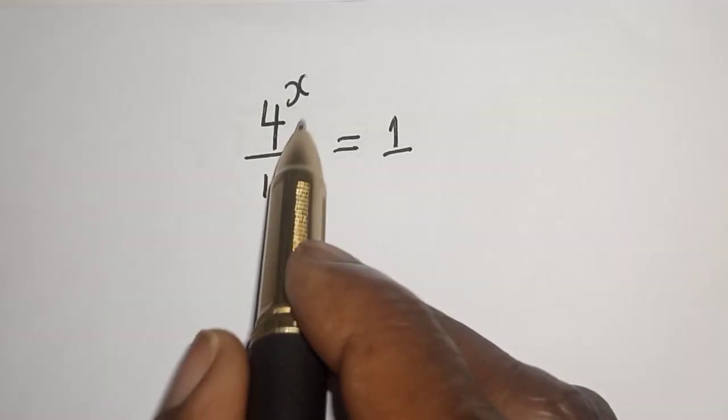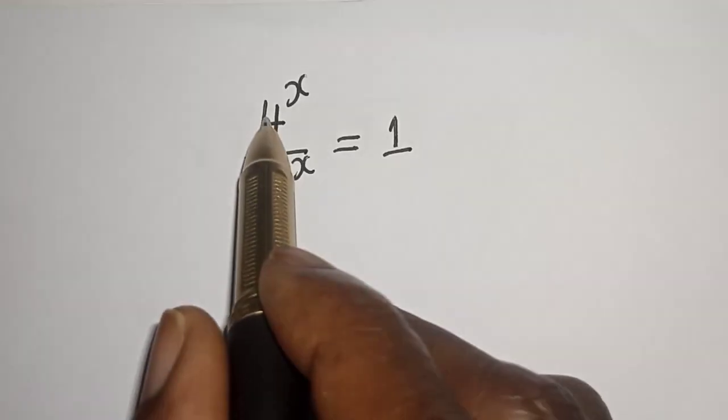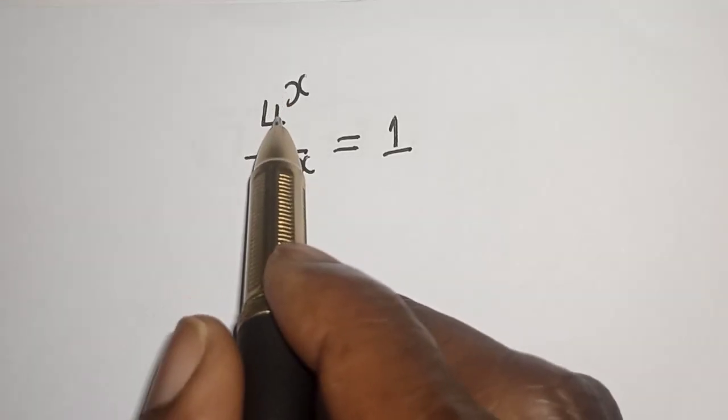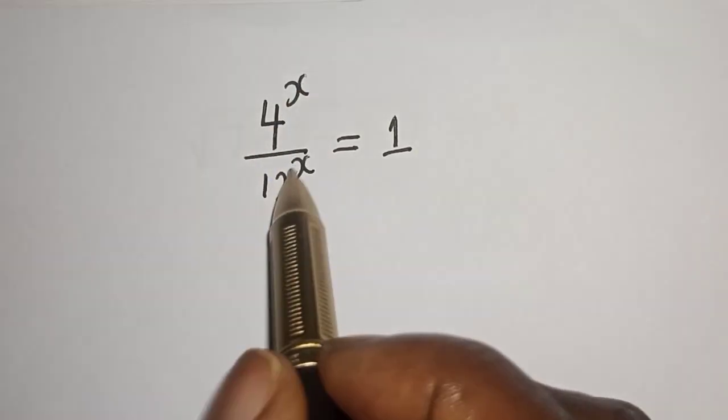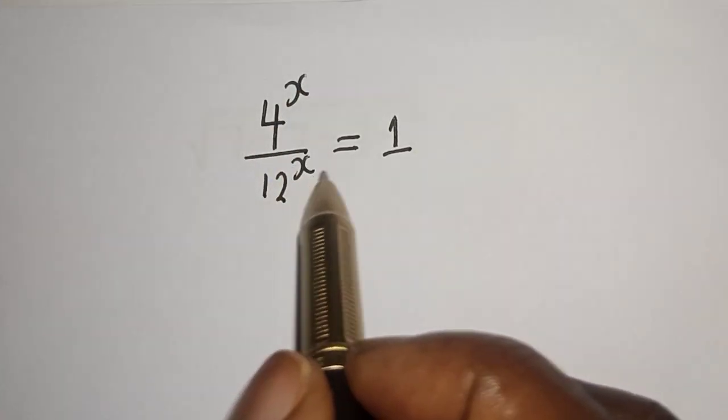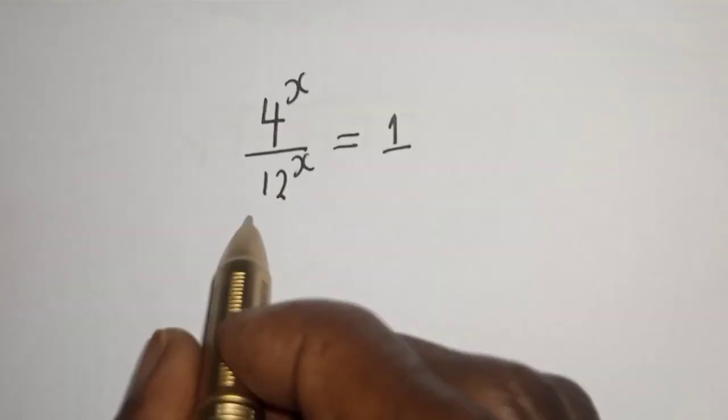Hello, welcome to Magist. In this class, we want to find the value of s from this equation: 4 raised to power s divided by 12 raised to power s is equal to 1.